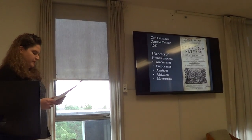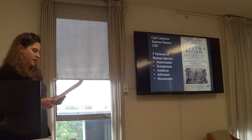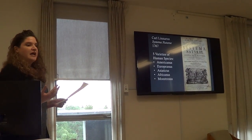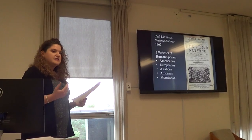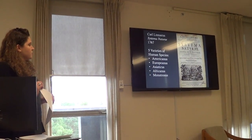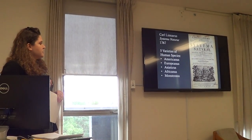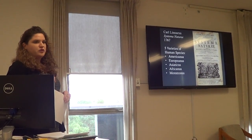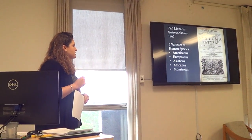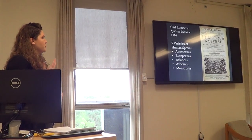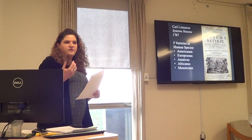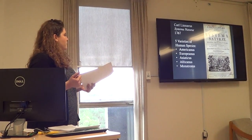The Scala Naturae was an ordering scheme with a nested hierarchy of species, genera, families, orders, classes, phyla, and kingdoms — a system still used in the sciences today. At the core of this ordering system was his designation of five different kinds of humans: Americanus, Europeanus, Asiaticus, Africanus, and the fifth category of Monstrosus.